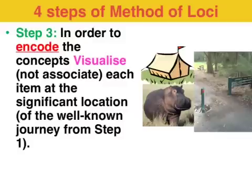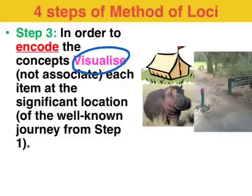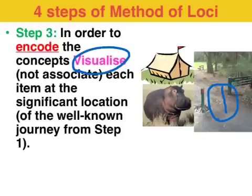Step three is the critical step in determining the success of the Loci technique. We need to encode the items at each of the loci or locations. Just talking about associating the items with the locations doesn't cut it — you need to be able to visualize the items at each of the locations. A way of testing this is to close your eyes, go on a mental journey, arrive at one of those loci, and that should cue the memory of the item. My run starts at this point, and therefore I need to be able to visualize a hippo camping, associating that with the hippocampus.